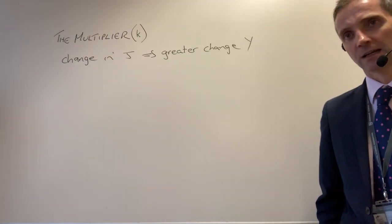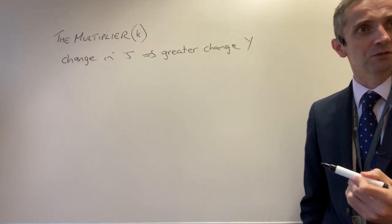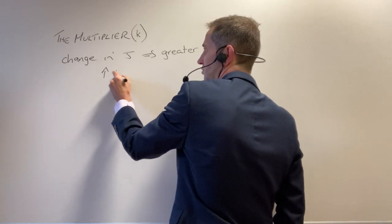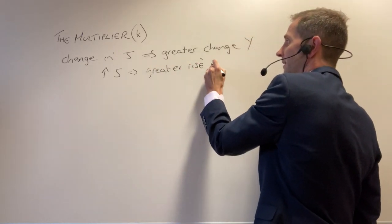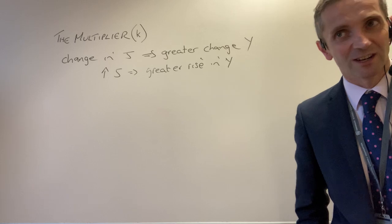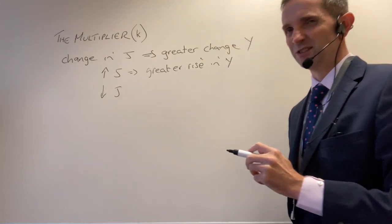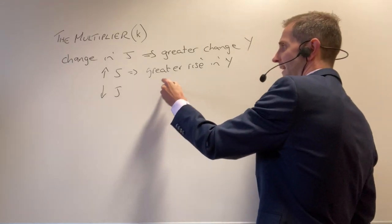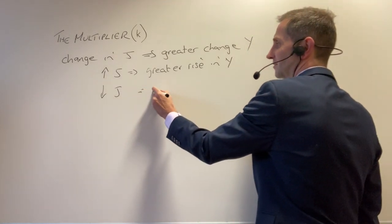Can that change in the injection be an increase and a decrease, or does it only work in one direction? It goes in both directions. So we can have an increase in J leading to a greater rise in Y — that's working in a positive direction. But it also works in a negative direction: if you get a reduction in said injection or a withdrawal, that will work in a downwards direction, and that is called a negative multiplier.